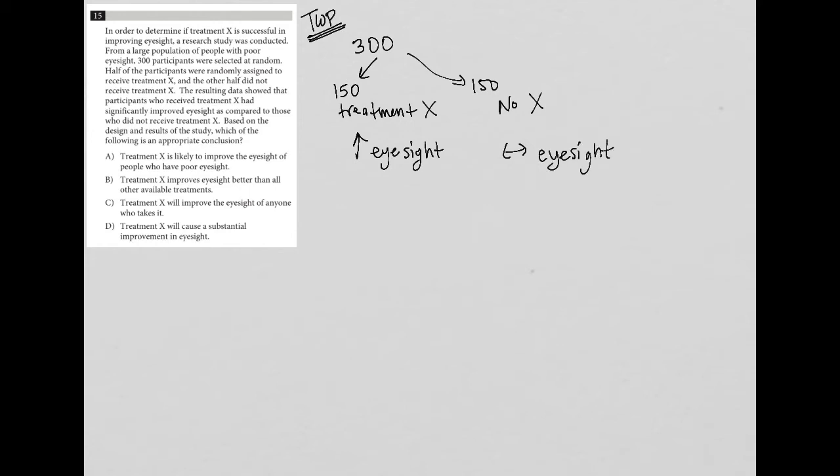Not better, not worse. So based upon this study, choice A says treatment X is likely to improve the eyesight of people who have poor eyesight. Well, what do we know? Yeah, so all 300 participants were chosen from a population of people who have poor eyesight. So it would seem that treatment X did improve eyesight. So I like choice A. But again, anytime you get yourself in a mode of process of elimination, never choose an answer right away. So A sounds good, but maybe one of these other answers is better.